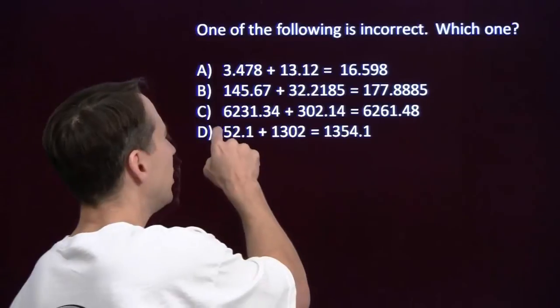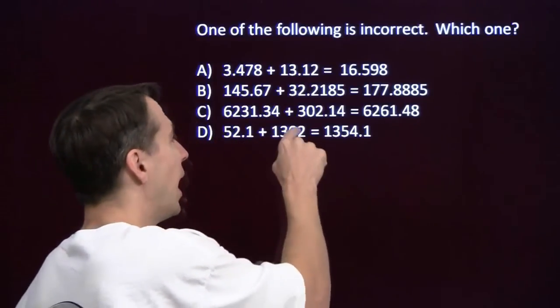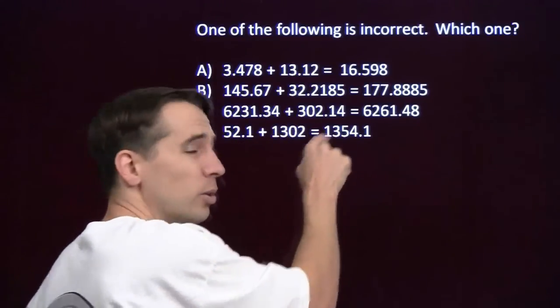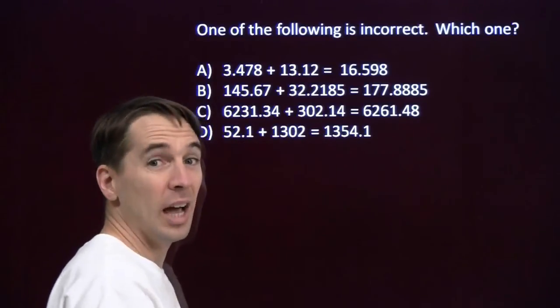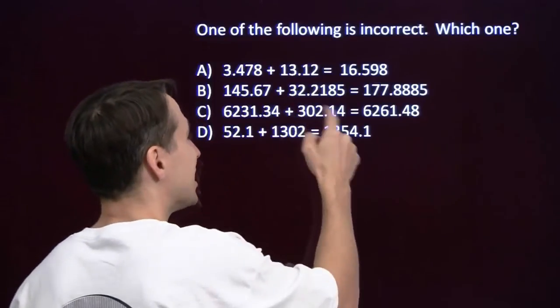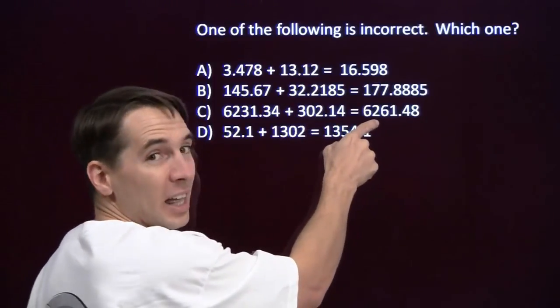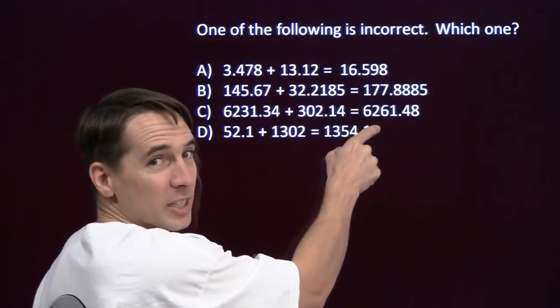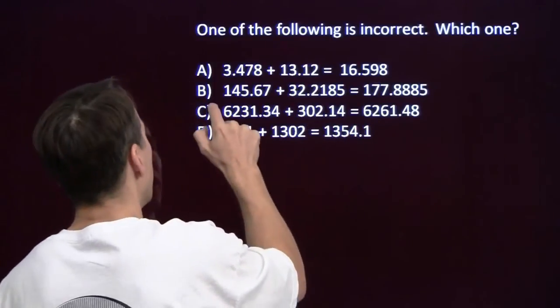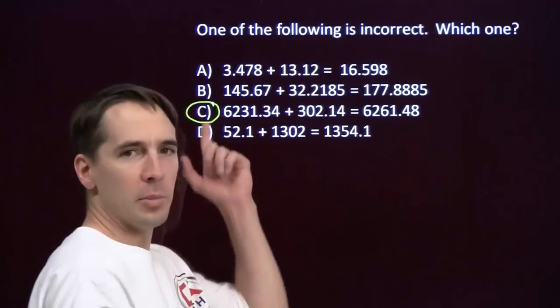Next one: I've got a number that's a little more than 6,200, and I'm adding a number that's a little more than 300. I should get a number that's a little more than 6,500. That's not more than 6,500 — this is the one that my calculator missed.